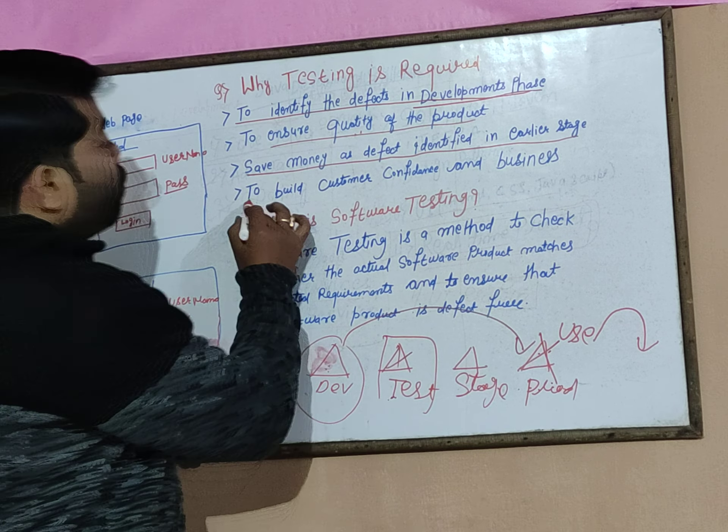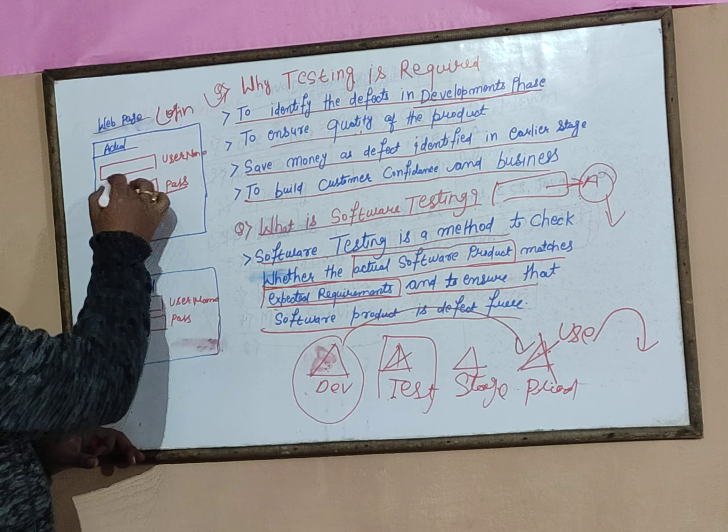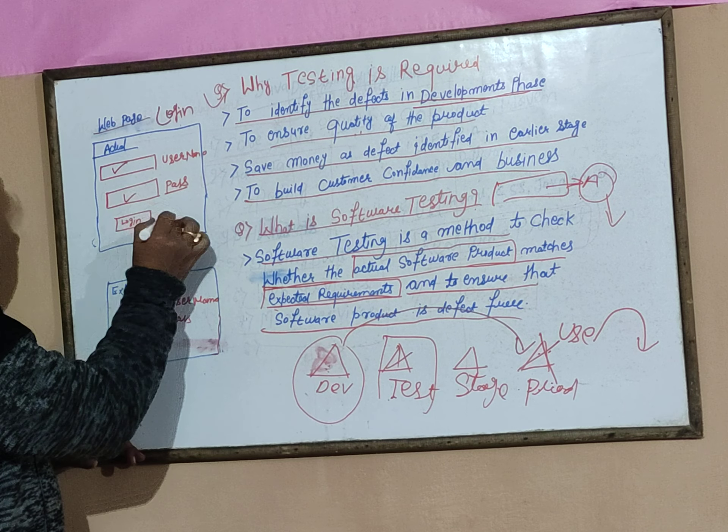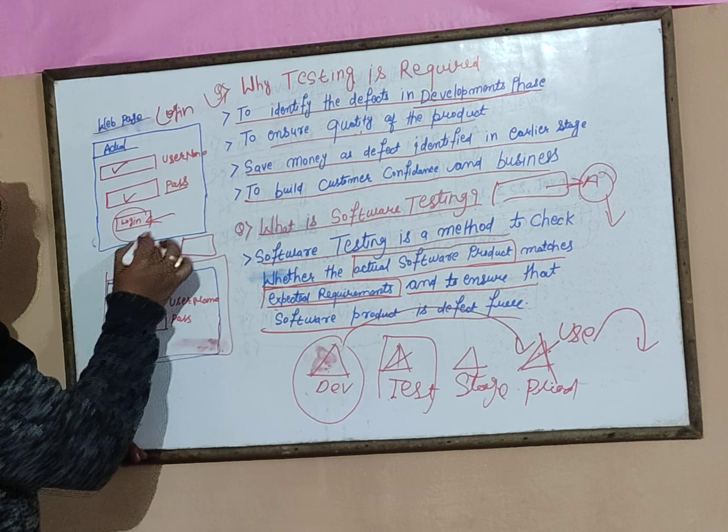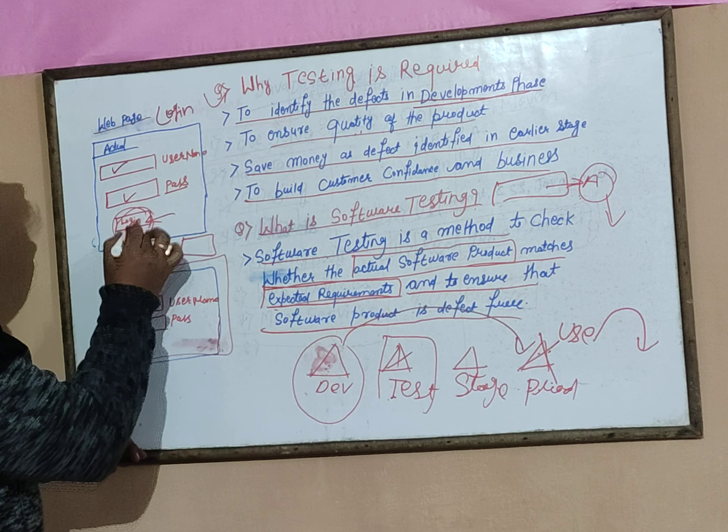For example, we have a web application with a login page. When we enter a username and password and click login, the home page should display. But as a tester, when you hit the URL, you notice the login button is not there — that is a defect. You report it to the developer: 'Hey developer, this button is missing, please look into this issue.' How you assign a defect to a developer is called the defect life cycle — I will make a separate video on that.